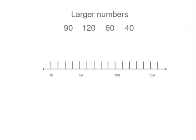So let's look at 90. There's a couple of ways you could do this. You could start at 50 and go forward. 10, 20, 30, 40, which takes you to 90.